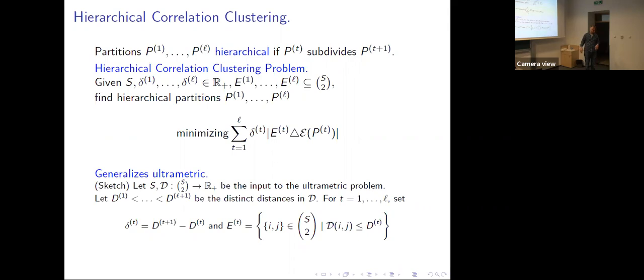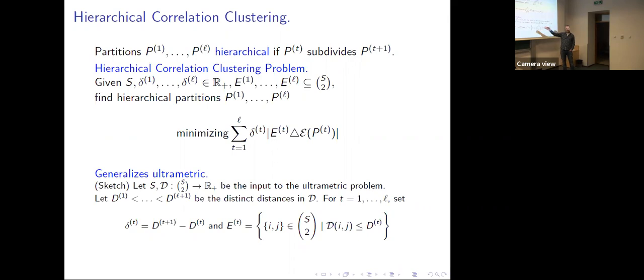They can also have don't-care constraints and such things, but we can't do that — so that's another limitation. This approach fails miserably for L2. I was hoping to prove that if you could do weighted correlation clustering within a certain factor, you'd get the same factor for the ultrametric, but I didn't see how. The constants in our result are ridiculous — I'll just claim it's a constant. Thank you.